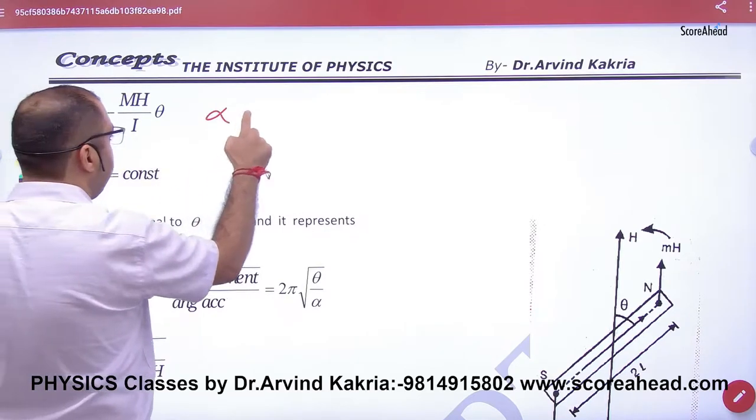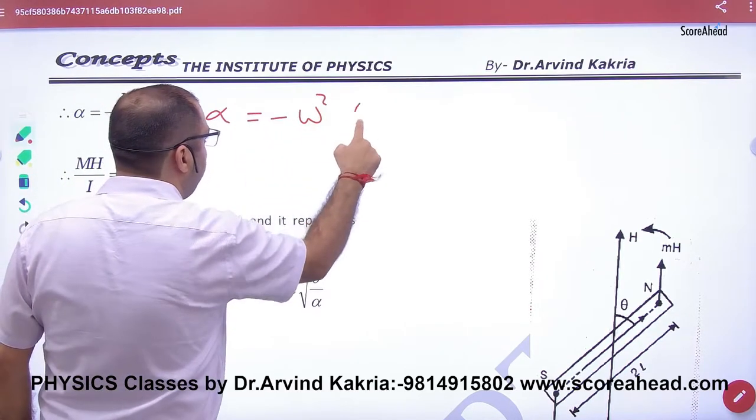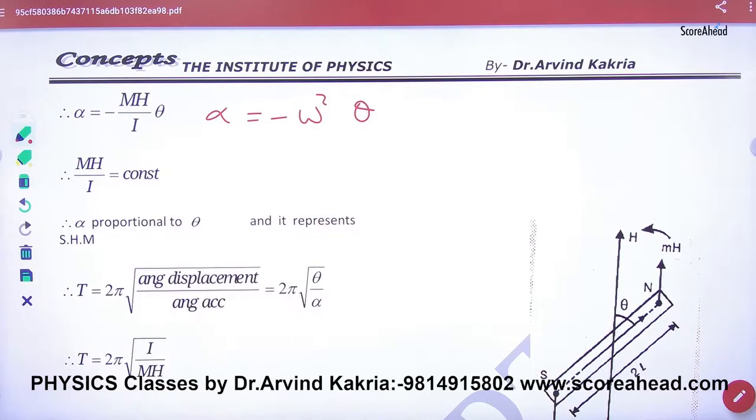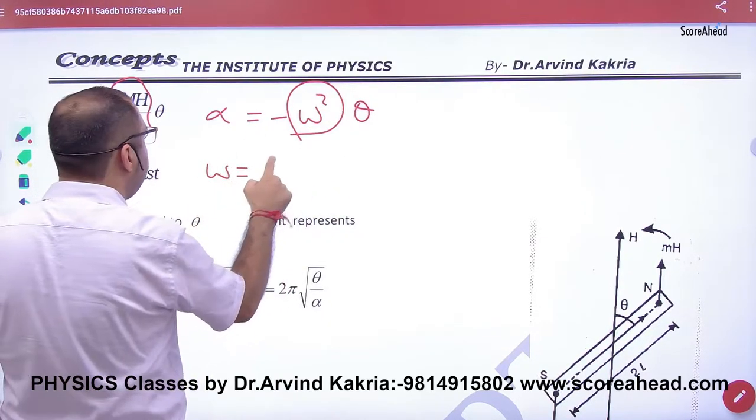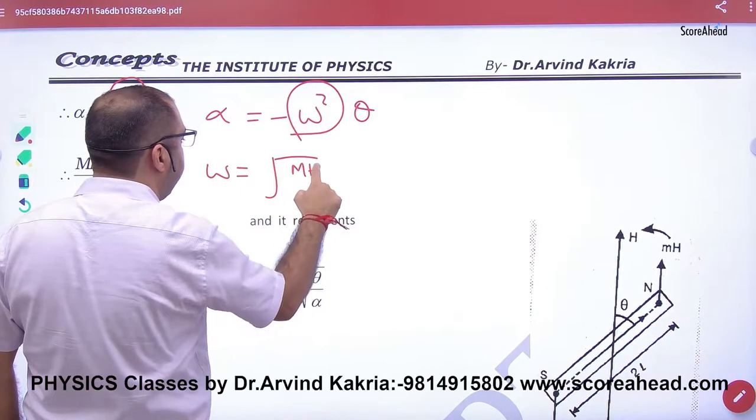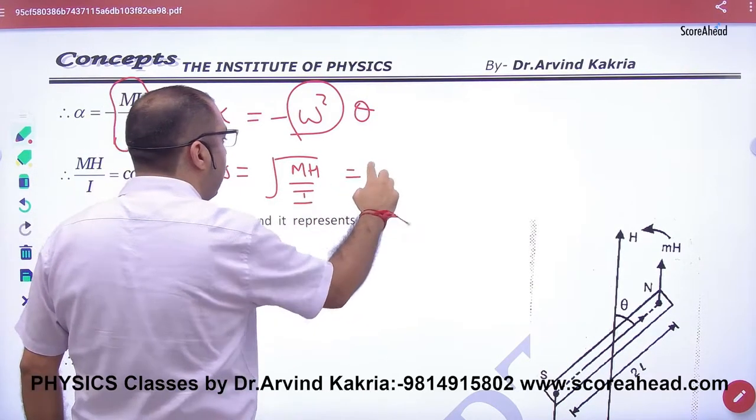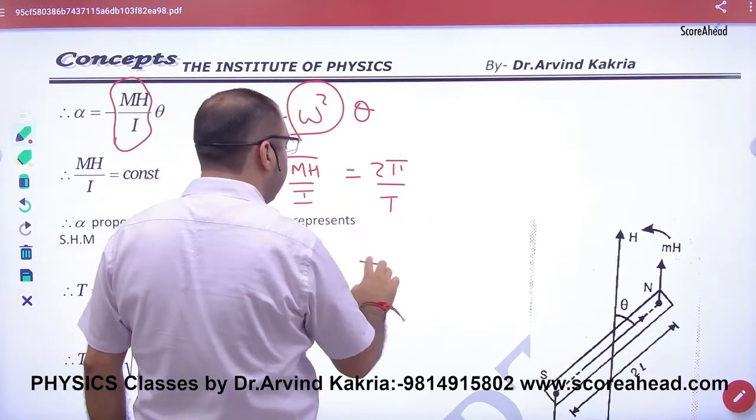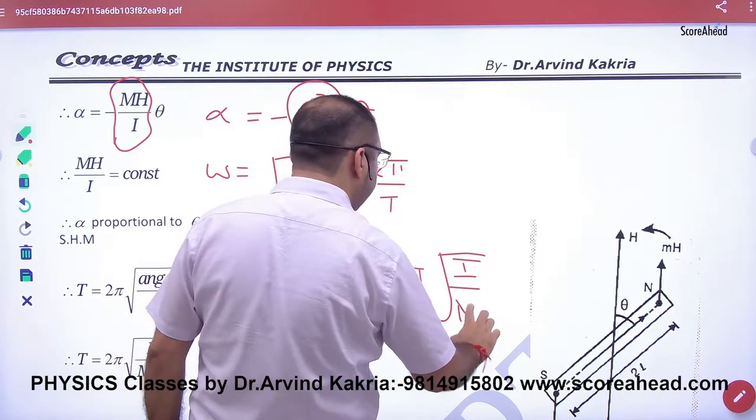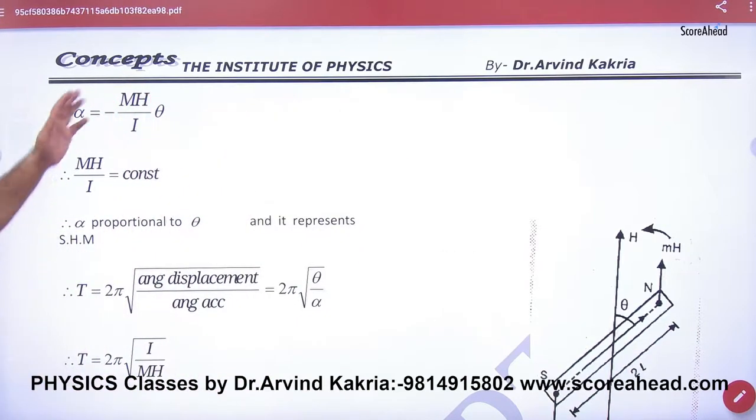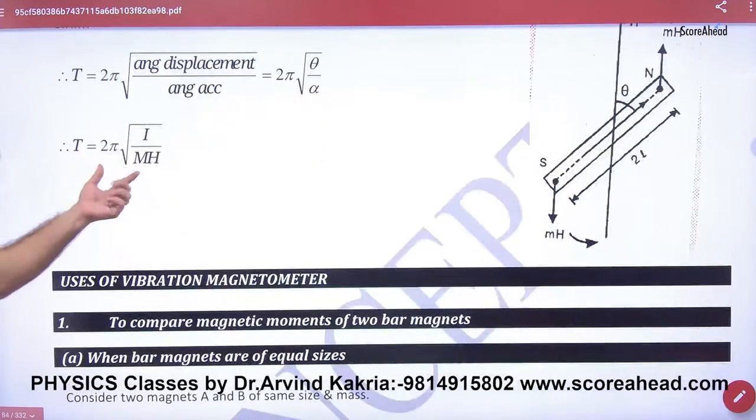If it is in SHM, then alpha equals minus omega square theta - the SHM equation for angular SHM. Compare these two and omega will be under root of MH by I. Omega is 2π by T, so T will be 2π under root I divided by MH. You have to know this theory and formula.